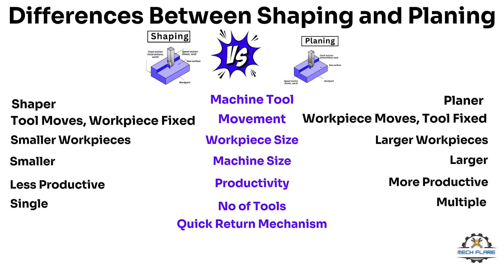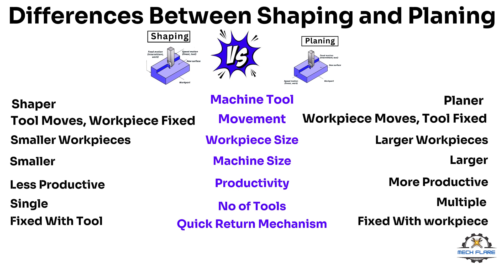Quick return mechanism: In shaping, the quick return mechanism is integrated with the ram that holds the cutter, so the shaping machine uses the quick return mechanism for tool movement. In planing, the quick return mechanism is integrated with the work table that holds the workpieces, so the planing machine uses the quick return mechanism for work table movement.